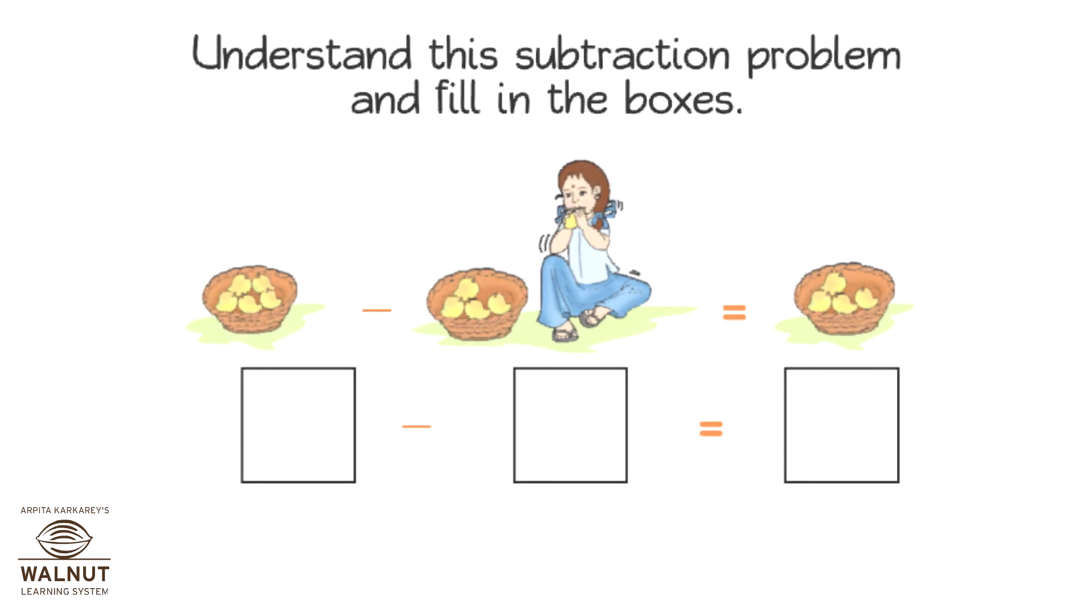There are 5 mangoes in a basket. A girl ate 1 mango. How many mangoes left in the basket? 5 minus 1 is equal to 4.